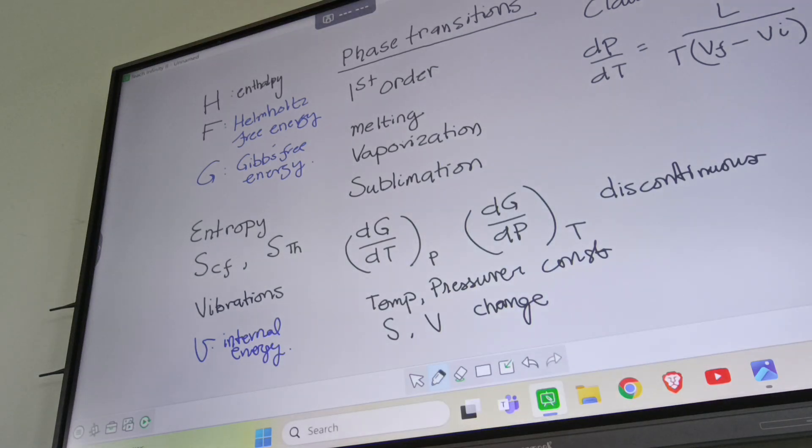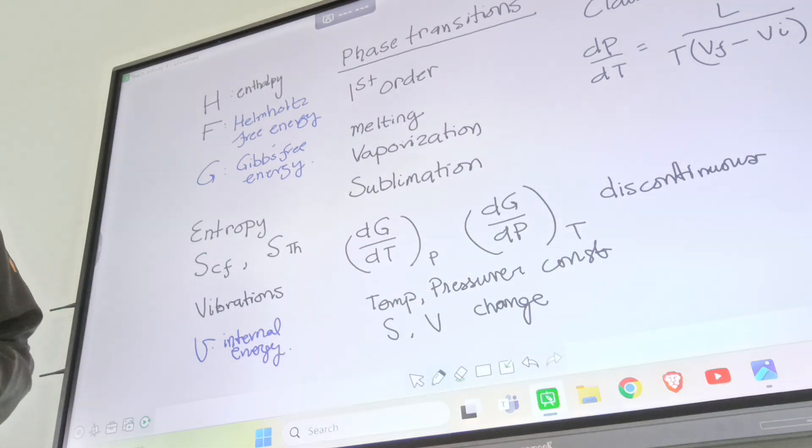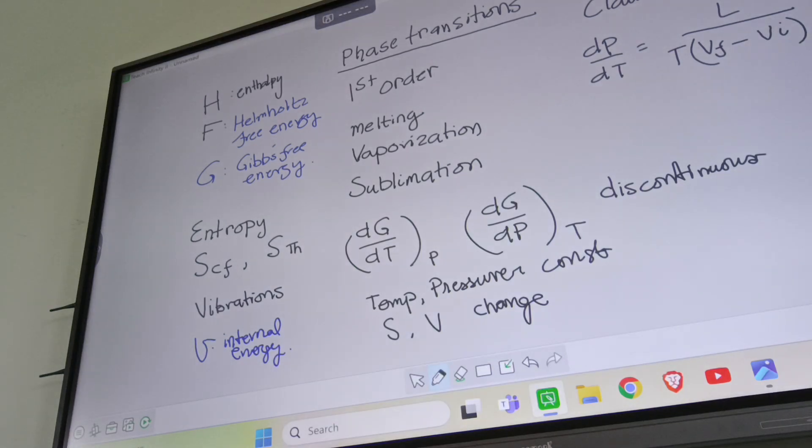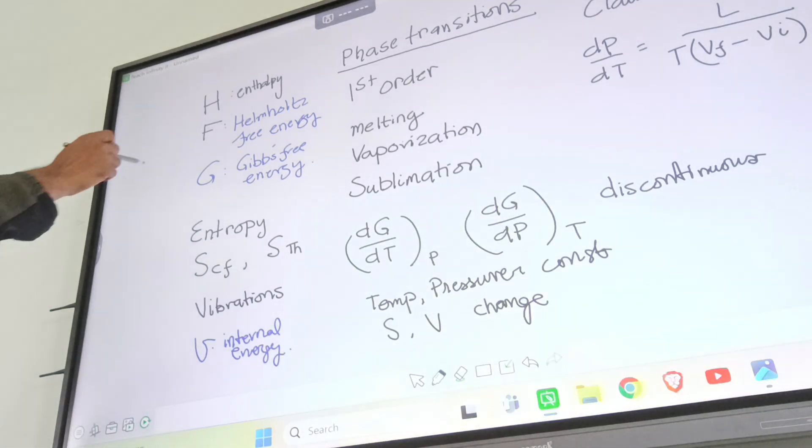Let's say H, enthalpy. Enthalpy is the total heat content in the system. How much heat is present, it is called enthalpy, H.